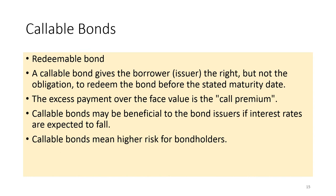A callable bond, also known as a redeemable bond, is a bond with an embedded call option. A callable bond gives the borrower the right but not the obligation to redeem the bond before the stated maturity date. When an issuer calls its bonds, it pays investors the call price together with accrued interest to date, and from that point onwards, stops making interest payments. If the issuer agrees to pay more than the face value amount of the bond when called, the excess of the payment over the face amount is called the call premium. In most cases, the call price is greater than the par value of the bond. Callable bonds may be beneficial to the bond issuers if interest rates are expected to fall — in such a case, the issuers may redeem their bonds and issue new bonds with lower coupon rates.